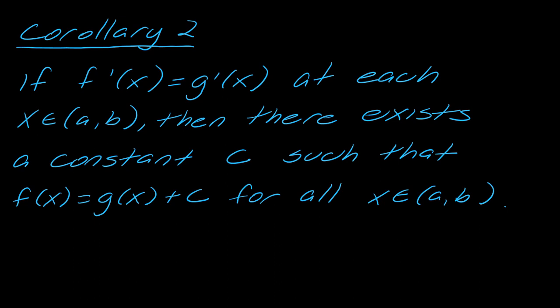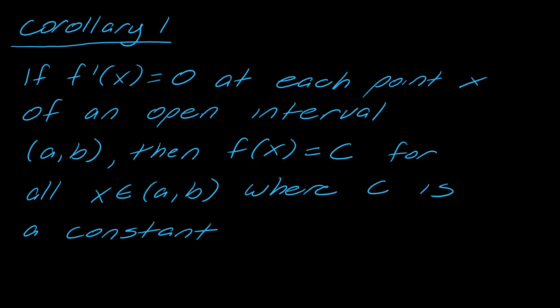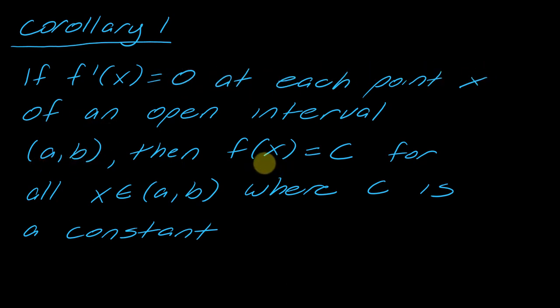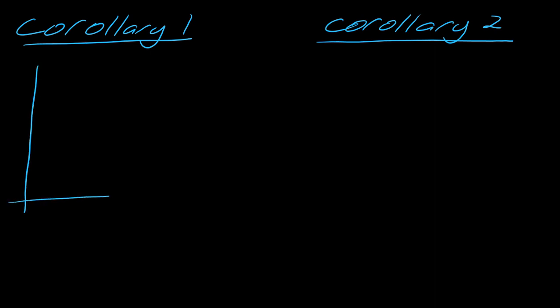Now of course, what do these things mean? Going back to this first one, it says f prime of x equals zero. So what does that mean about the tangent lines? This means that every tangent line is going to be horizontal, right? So this has to be true for each point from a to b, and then f of x equals c, where c is a constant. So let's draw a little picture here.